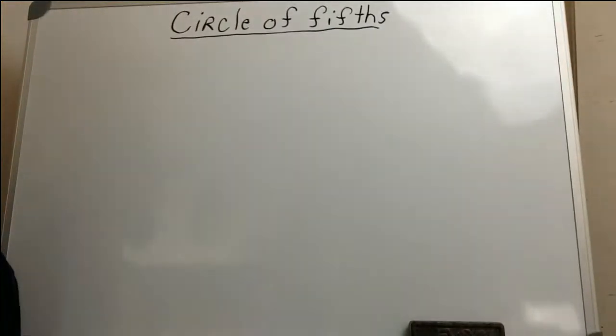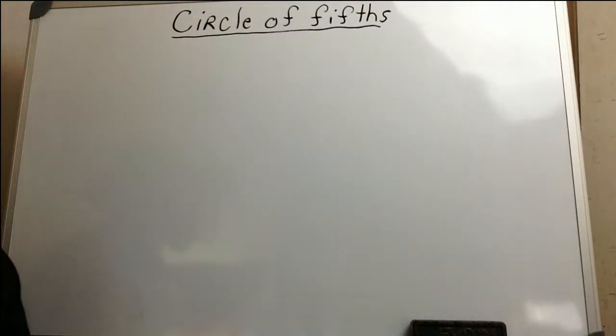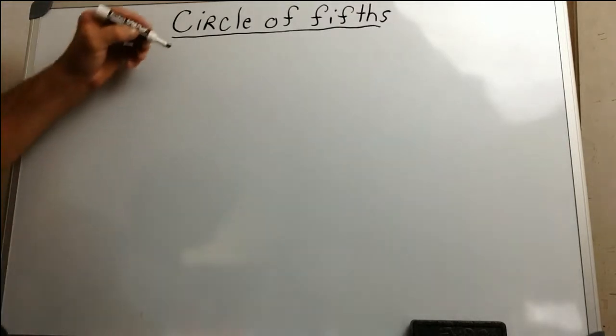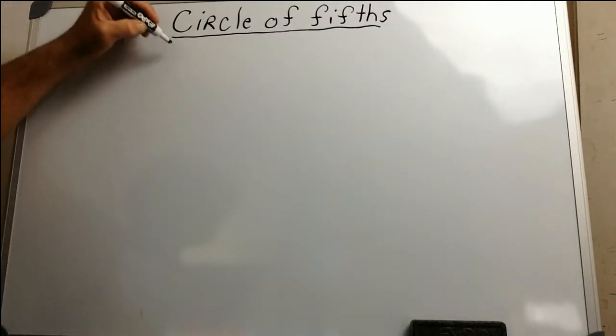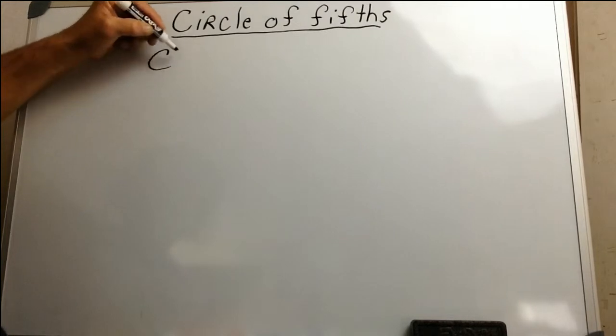Hi folks and welcome to PJ's Music Theory.com. Today we're talking about the circle of fifths and the circle of fourths and how they work. We're going to put these in a matrix rather than the actual circle, because visually you benefit more. So we start with the C scale — C is always our first one because it has no sharps and no flats.